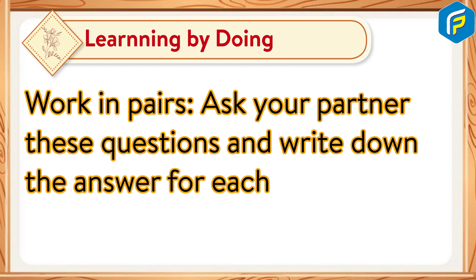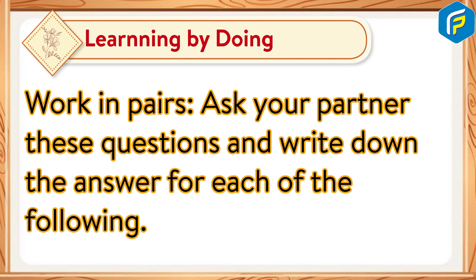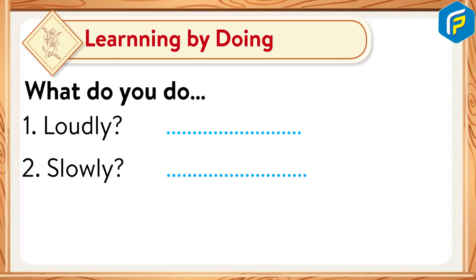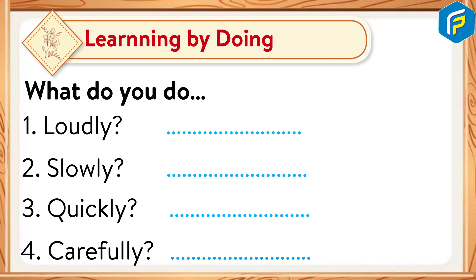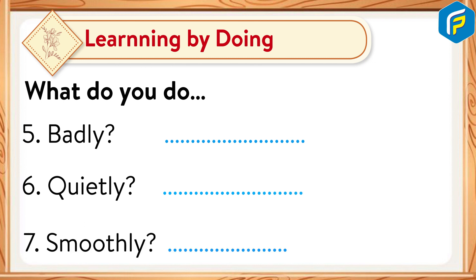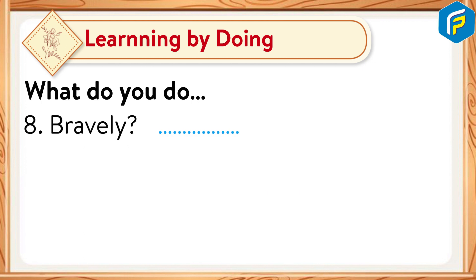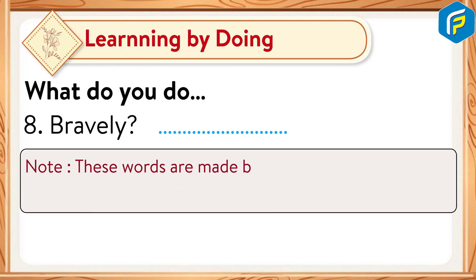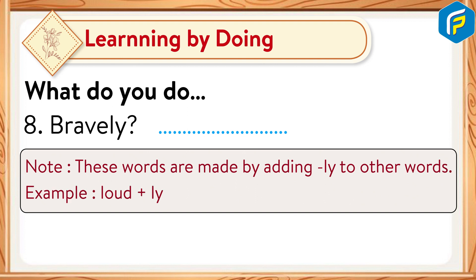What do you do: one, loudly; two, slowly; three, quickly; four, carefully; five, badly; six, quietly; seven, smoothly; eight, bravely. Note: these words are made by adding '-ly' to other words. Example: loud plus ly equals loudly.